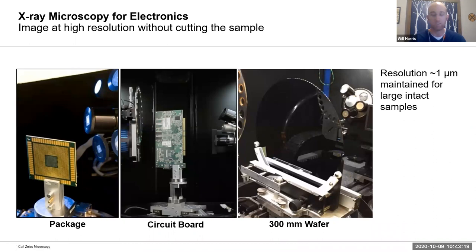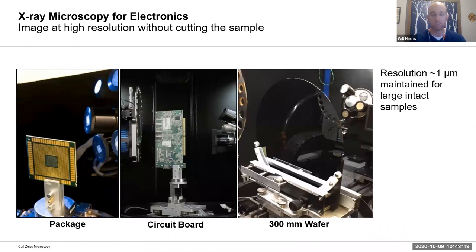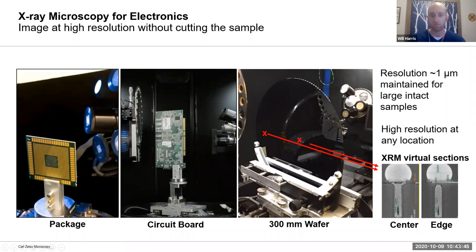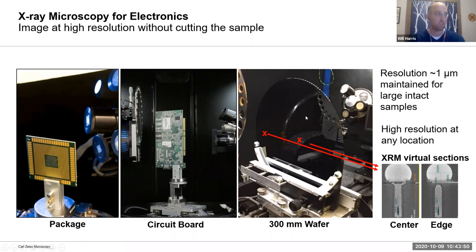The last part of the application space I wanted to touch on is the world of electronics and semiconductors — people looking at either reverse engineering, cybersecurity, or device fabrication. We've seen a range of different sample types from small packages and small electronic components up to big boards and wafers. The x-ray microscopy methodology for magnification is useful because in various spots on even a big object like a dinner-plate-sized wafer, you can get high-resolution data at just about any location.